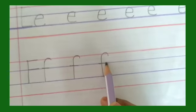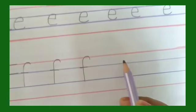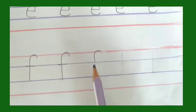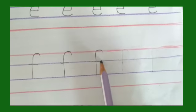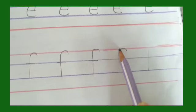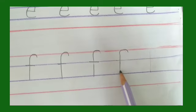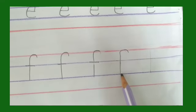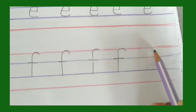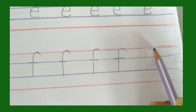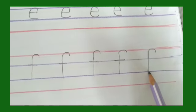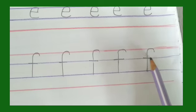Make a curve and come down to line number three, the blue line, and on the other blue line make a sleeping line — letter F. Curve, come down to line number three, that is the blue line, and make a sleeping line.